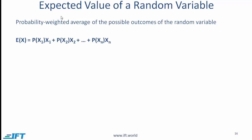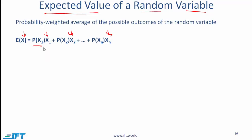We now change gears and talk about the expected value of a random variable. The expected value is the probability weighted average of the possible outcomes of the random variable. If the random variable is x, and x1, x2, all the way to xn represent the different possible outcomes, then by multiplying each outcome by the probability of that outcome and adding up these numbers, we have the probability weighted average.